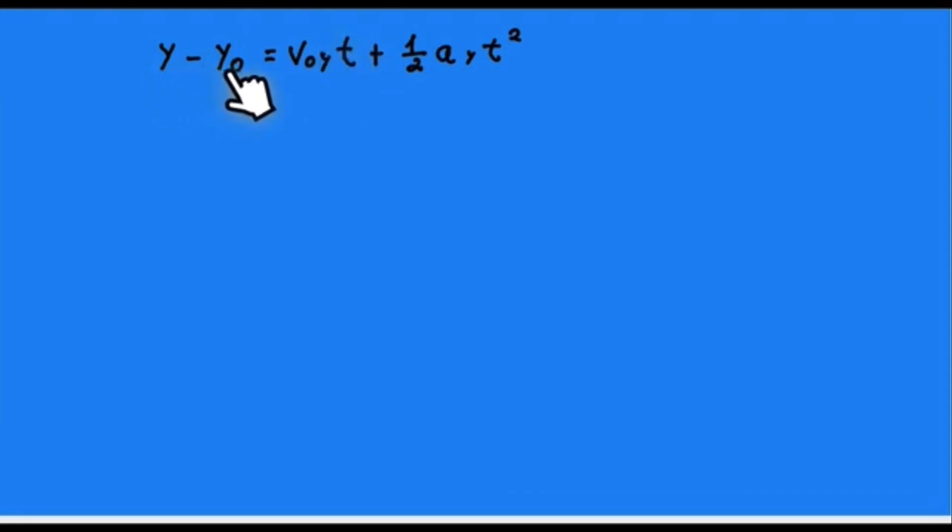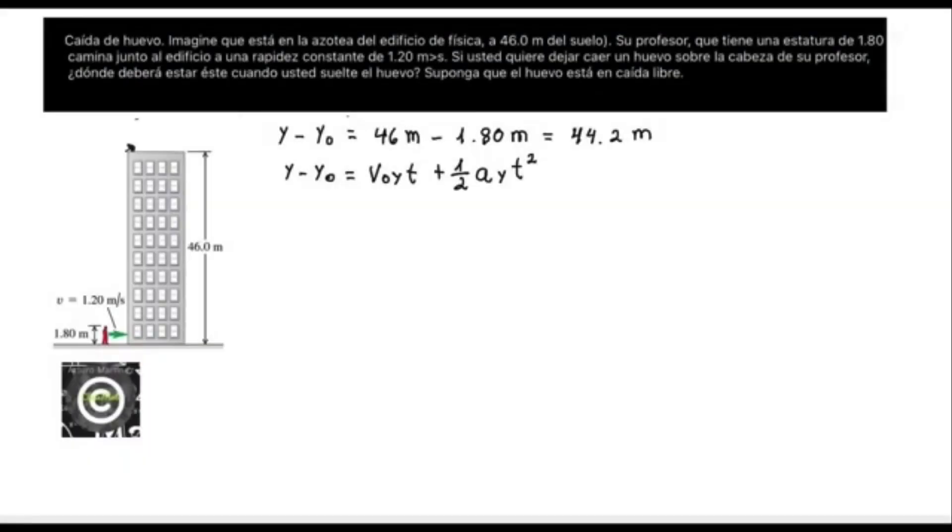Y minus the initial value is the distance that the egg will travel, but we are going to nullify this value. The goal now would be to rearrange this equation and solve it. We can substitute the known data. We know the distance that the egg will travel, which is 44.2 meters.